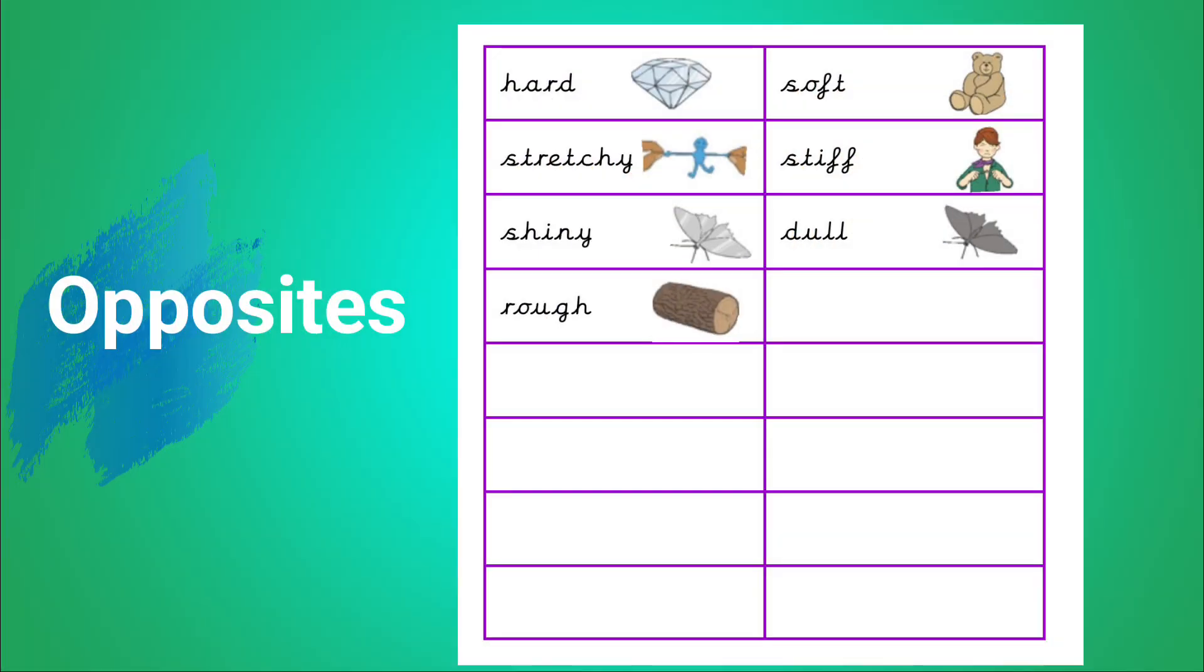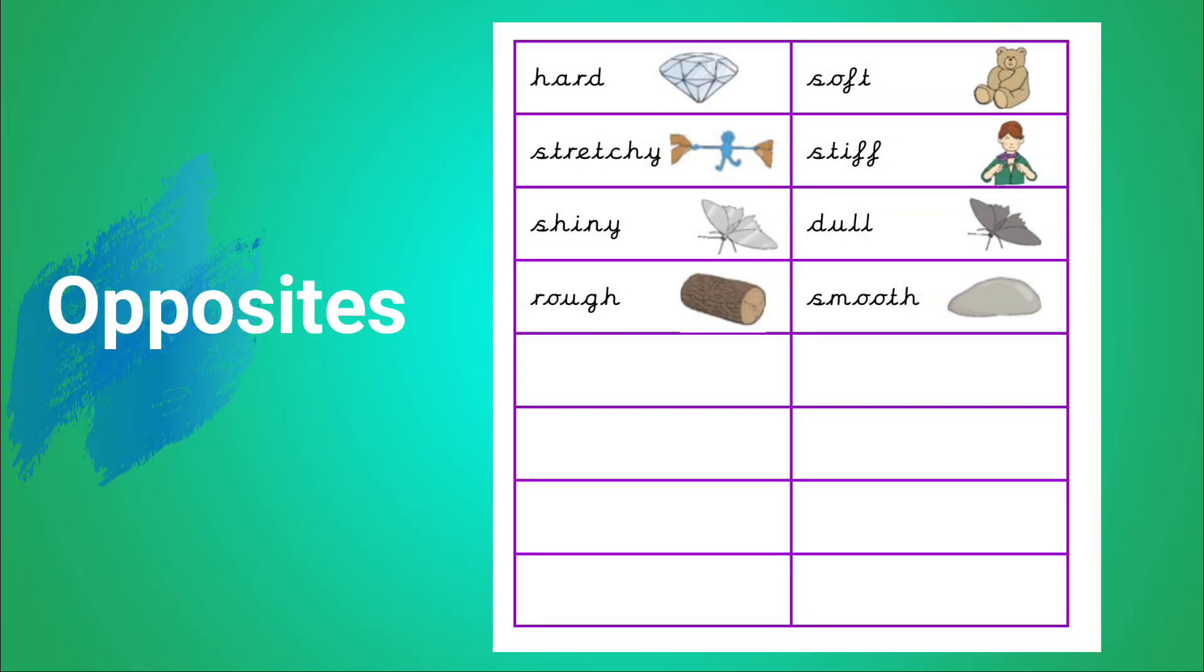Rough. Like the bark on a tree. The opposite of rough is smooth. Like a smooth pebble on the beach.